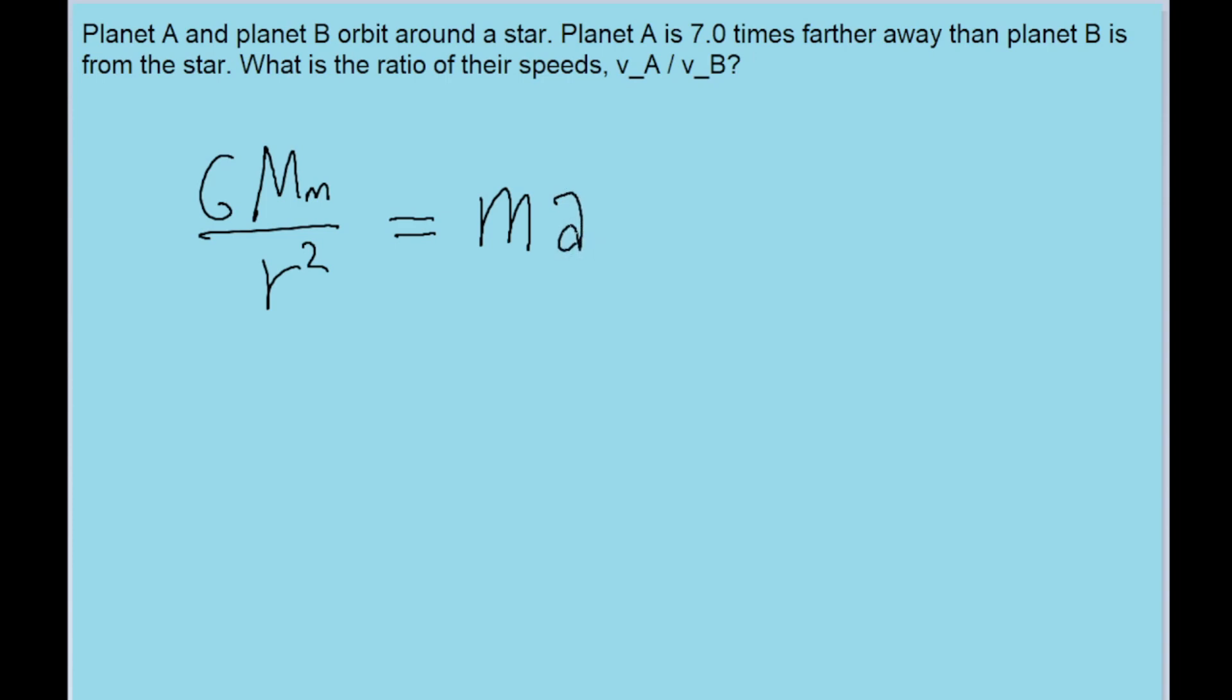Except since we're talking about a centripetal acceleration, this a can be written as V squared over R. And now some simplification can be done here, like this R can be cancelled out, so can the small m.